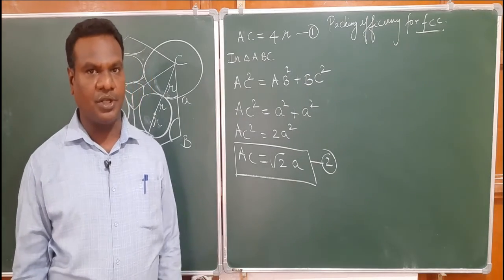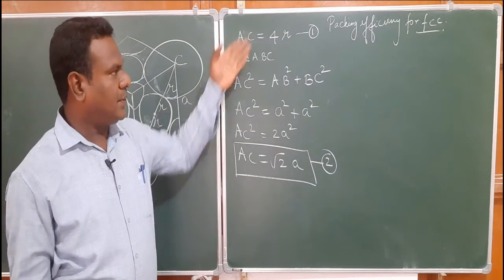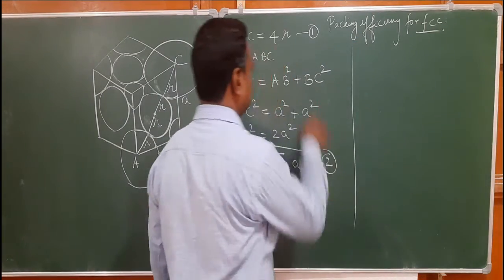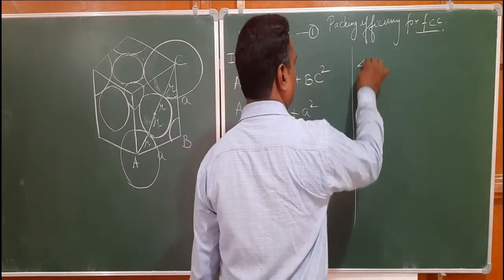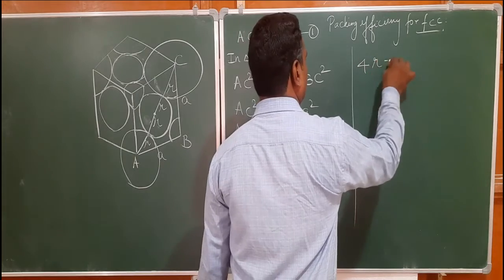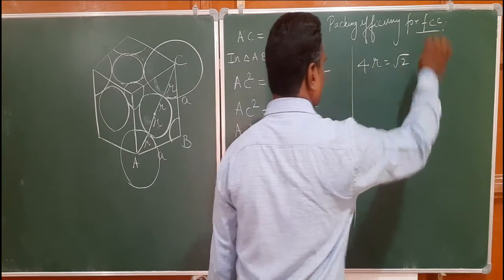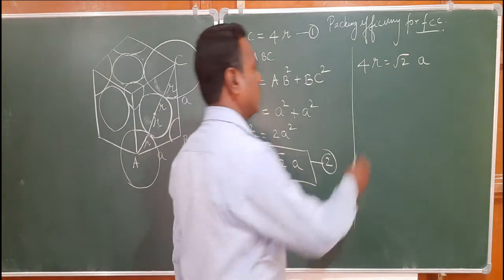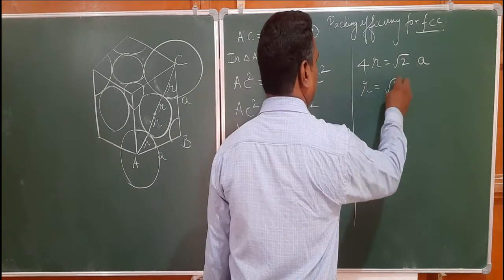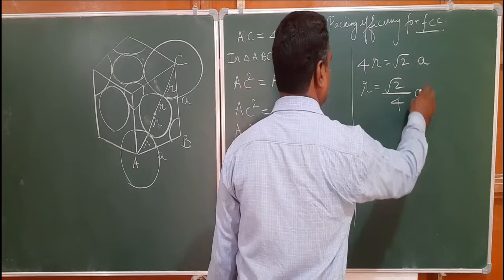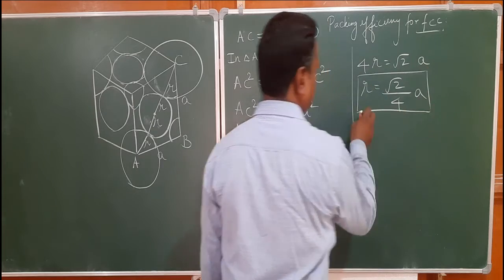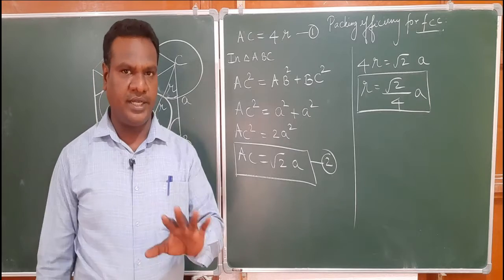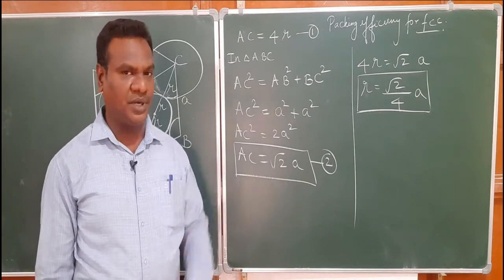Now equating equation 1 (AC = 4R) and equation 2 (AC = √2·A), we get 4R = √2·A. Therefore, R = (√2 / 4) · A. This gives us the radius of the atom in terms of the edge length A.